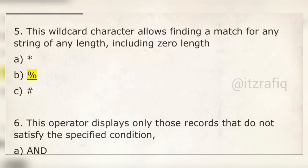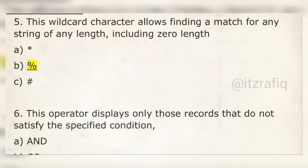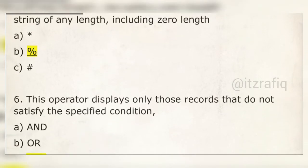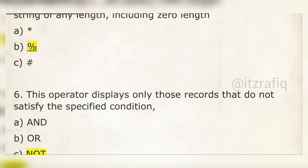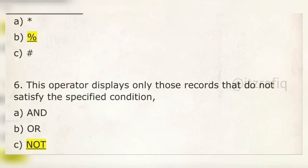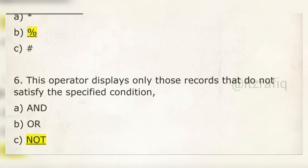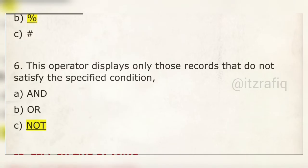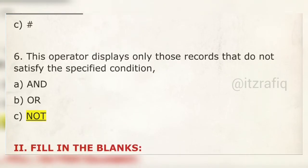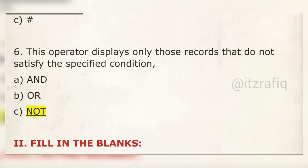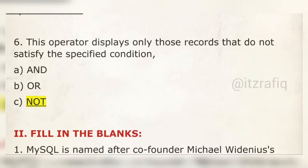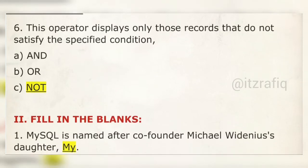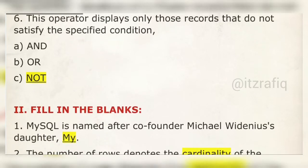The wildcard character % matches either zero or more characters, so it is used for broad searches. Number six: the operator that displays only those records that do NOT satisfy the specified condition is the NOT operator — it shows the opposite of the given condition.